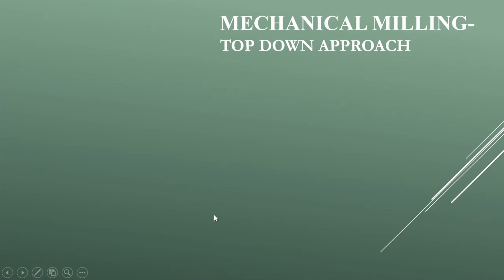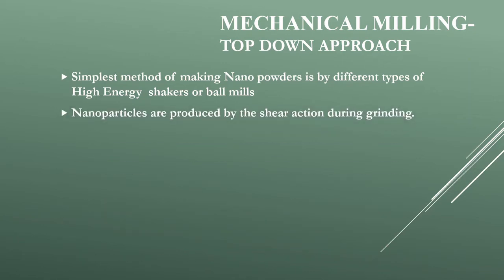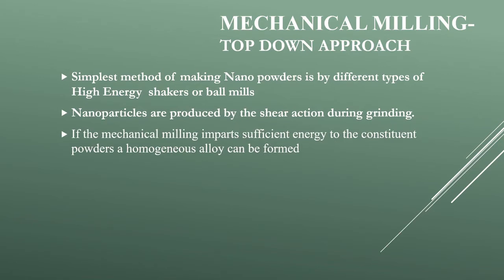Mechanical milling is basically a top-down approach. It is the simplest method of making nano powder using different types of high-energy shakers or ball mills, as seen in the animation. Nano particles are produced by the shear action during grinding — they are crushed. If the mechanical milling imparts sufficient energy to the constituent powders, a homogeneous alloy can be formed.